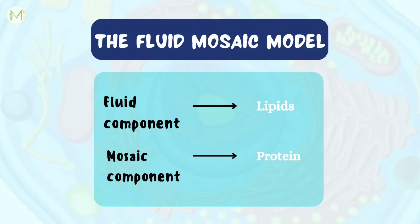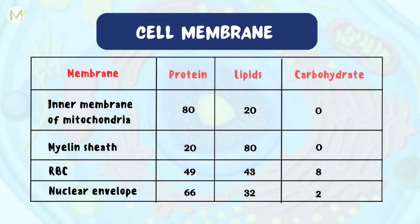A cell membrane is made up of lipids, proteins, and carbohydrates. Proteins are major constituents of the cell membrane, and the inner mitochondrial membrane has the maximum protein concentration. Also note that only the myelin sheath of the nerve cell membrane has a higher lipid content than protein.